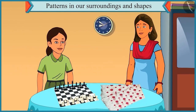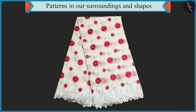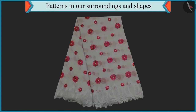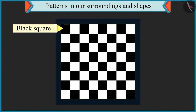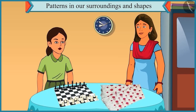Look, Chutki. Here a pattern is created in my saree using big and small flowers. Yes, the big and small flowers are repeated in your saree. Now look at this. A pattern of one black square and then one white square followed by a black square is repeated on a chess board.